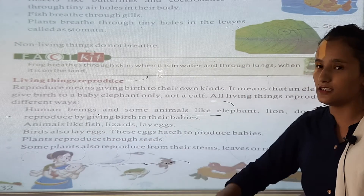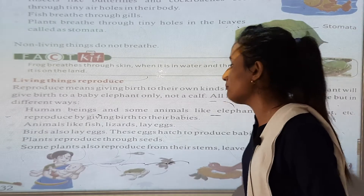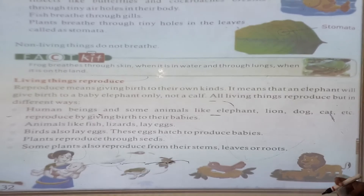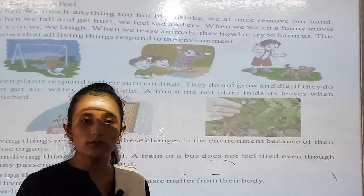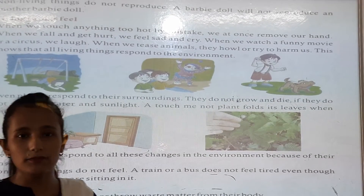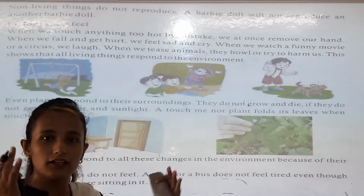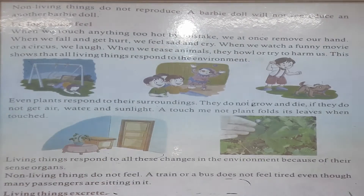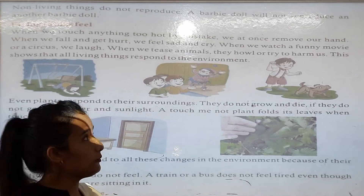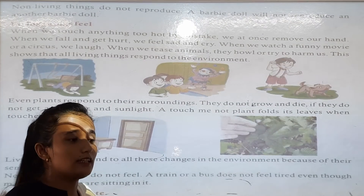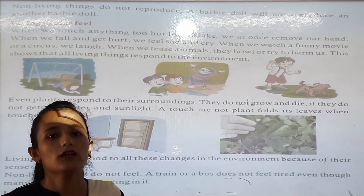Plants reproduce through seeds. Some plants are also reproduced from their stems, leaves, and roots. Non-living things do not reproduce — they cannot give birth to anything. A Barbie doll will not reproduce another Barbie doll — your doll cannot give birth to a new baby doll.